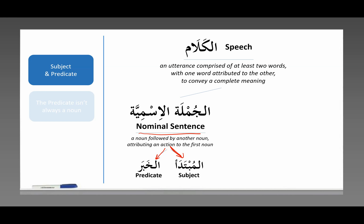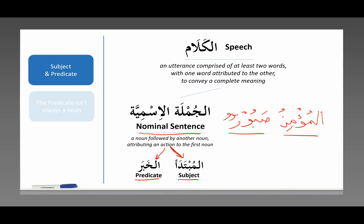The subject is the main topic of the sentence. The khabar is the information that you're giving about that subject. The example we always go back to is al-mu'minu saboor — the believer is patient. The believer is the subject; that's what we're talking about. What about him? Saboor — that's the khabar, the information we're imparting about him. The believer: subject. Patient: predicate.